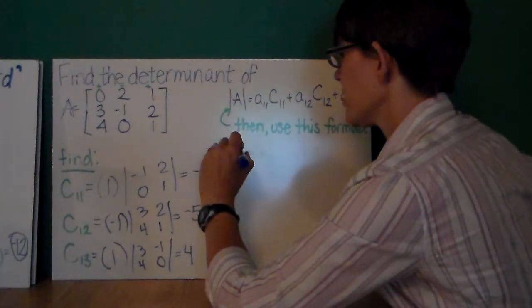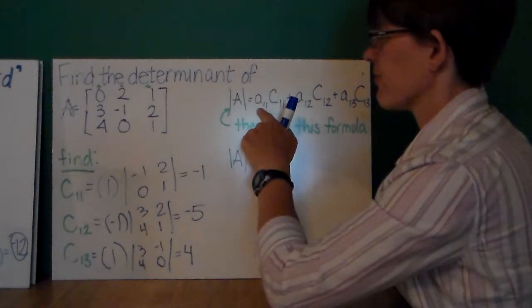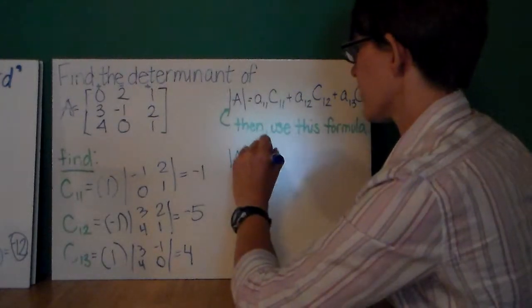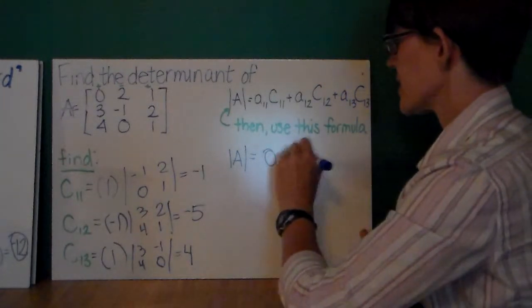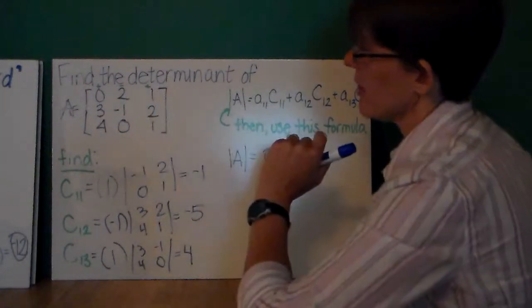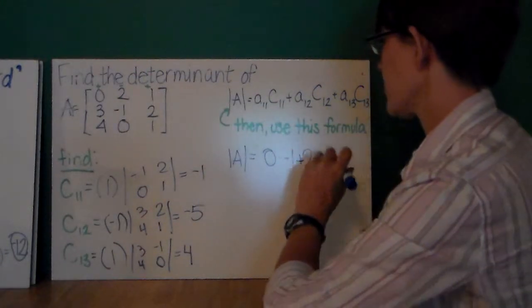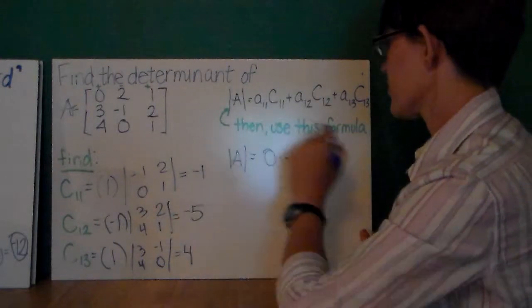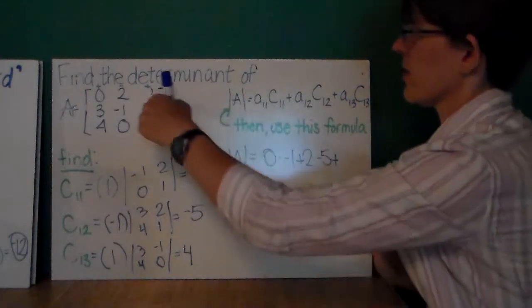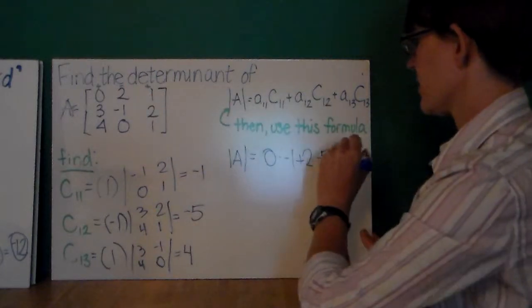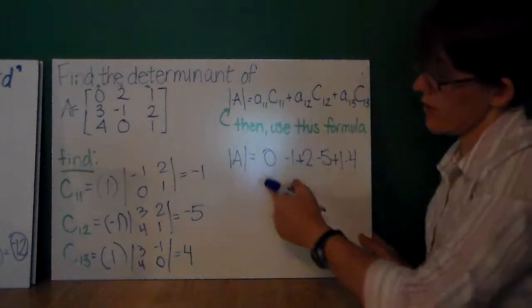Now, I'm going to use this formula, determinant of A equals first entry, 0, times first cofactor, negative 1, plus second entry in the first row, 2, times cofactor 1, 2, negative 5, plus the 1, 3 entry, 1, times the 1, 3 cofactor, 4.